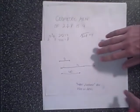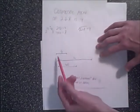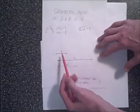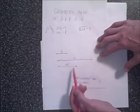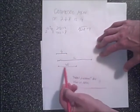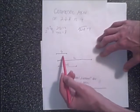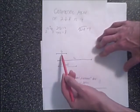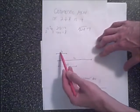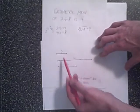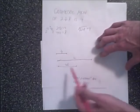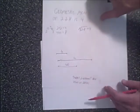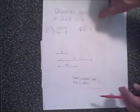Back to our project — here are two line segments with random numbers, 4 and 12. We want to find a line segment that is the geometric mean of these two. The square root of 4 times 12, which is 48, is 4 radical 3. Now let's get started with the construction.